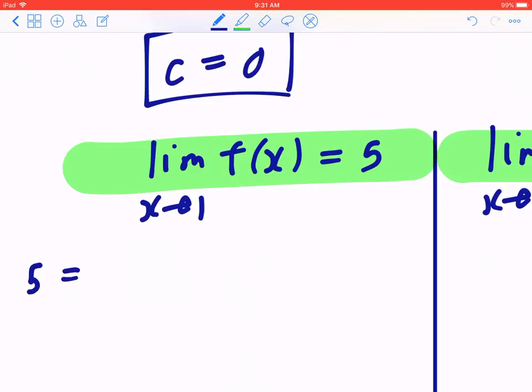So five equals a, and again, x is one, so one squared plus b times one.